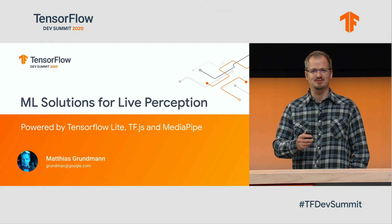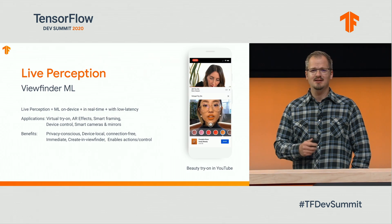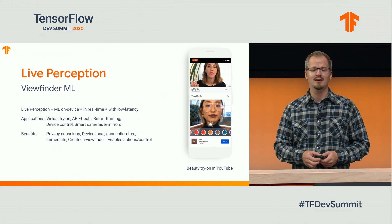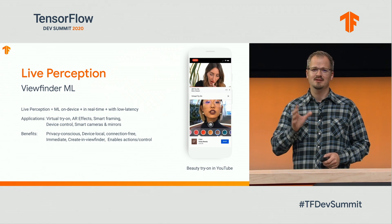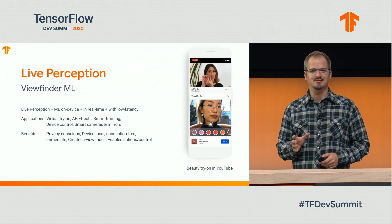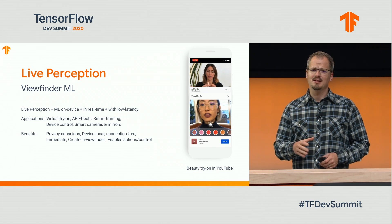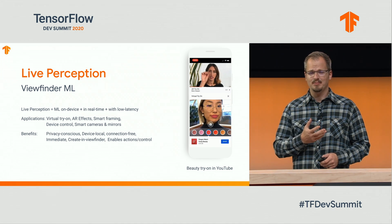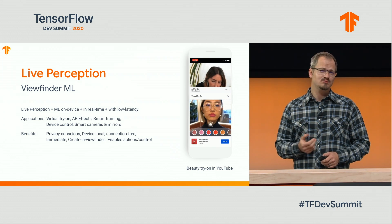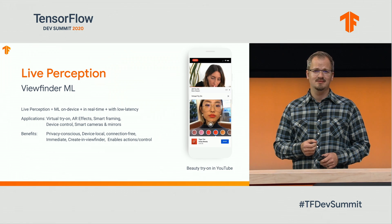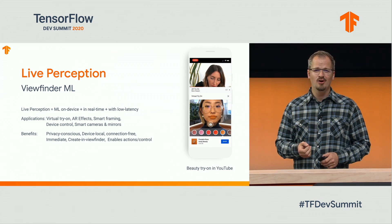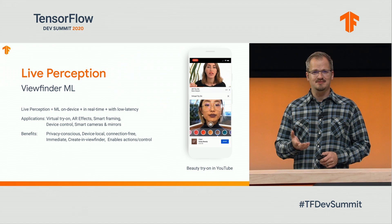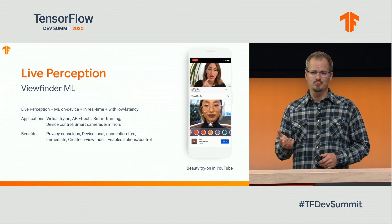What do we mean by live perception? Basically, any kind of machine learning that happens live in the viewfinder — that is, on device, in real time, with low latency. There's an abundance of applications, for example virtual makeup and glasses, self-expression effects like in Duo or Snapchat, or gesture control and smart framing on devices like the Nest device or the Portal device.